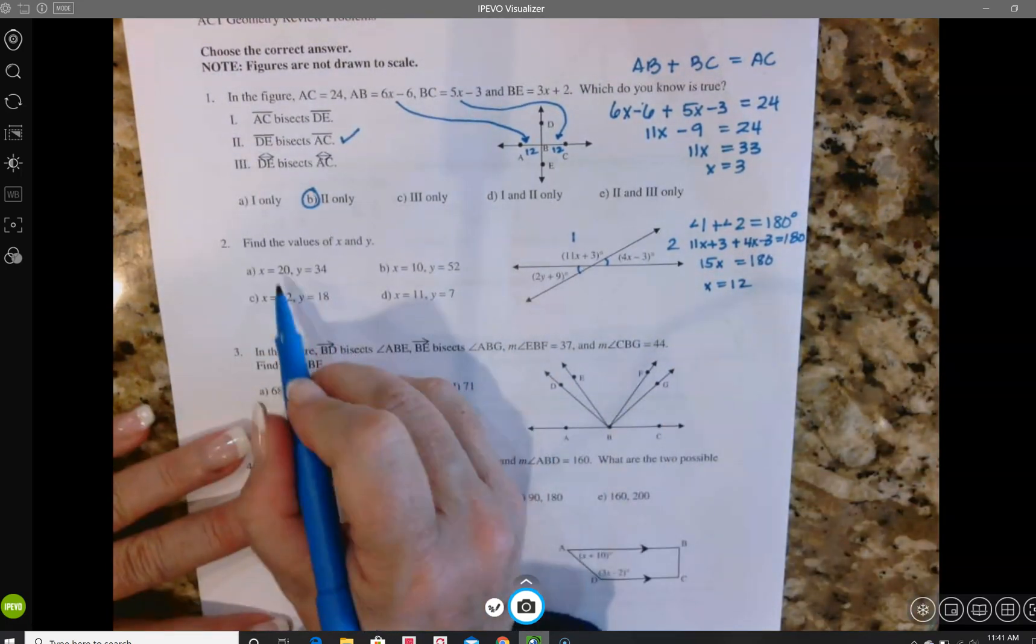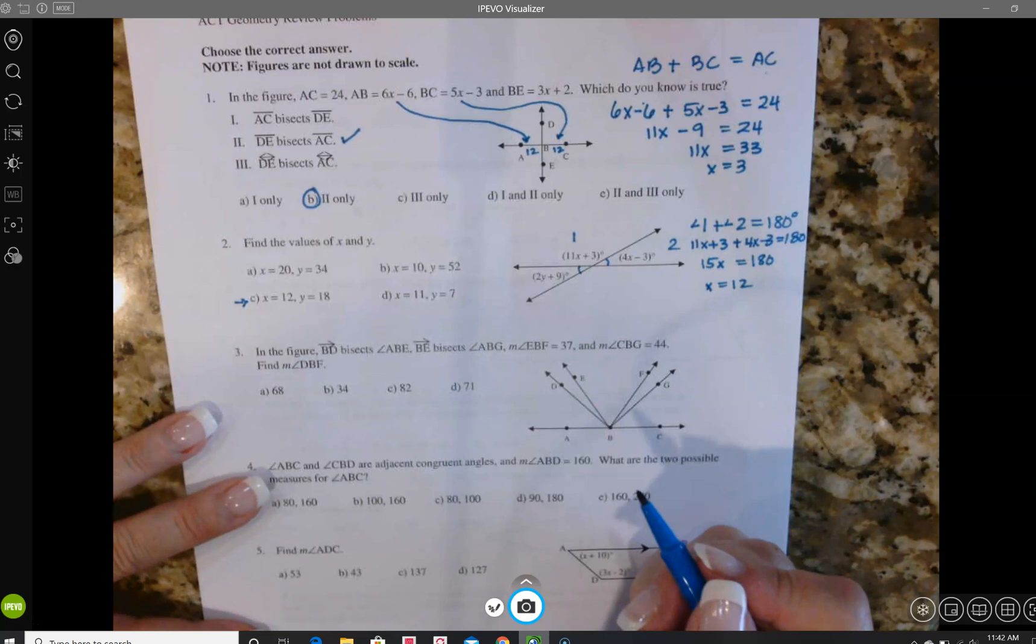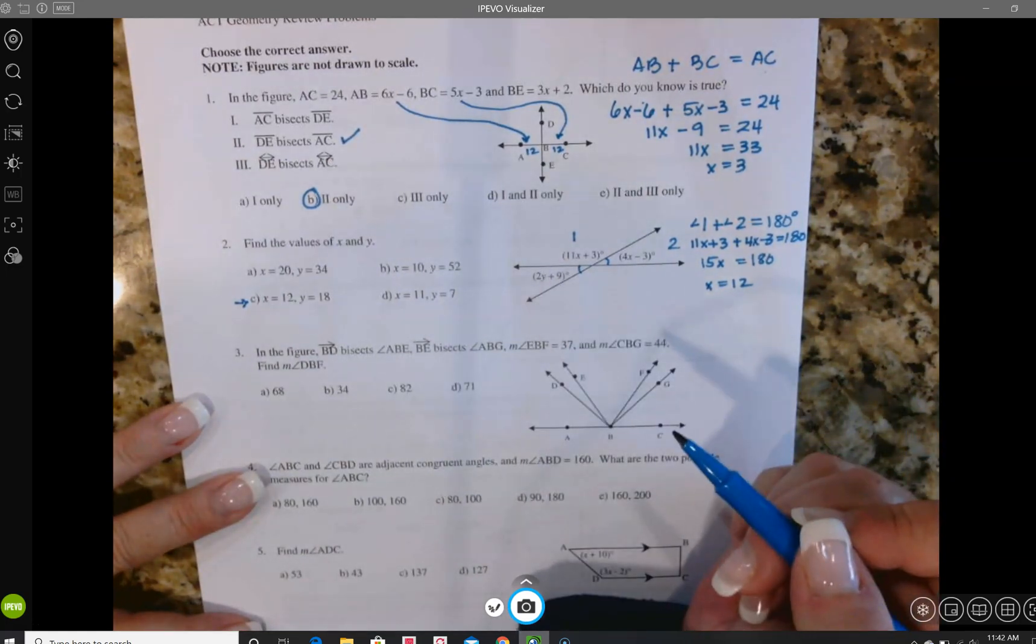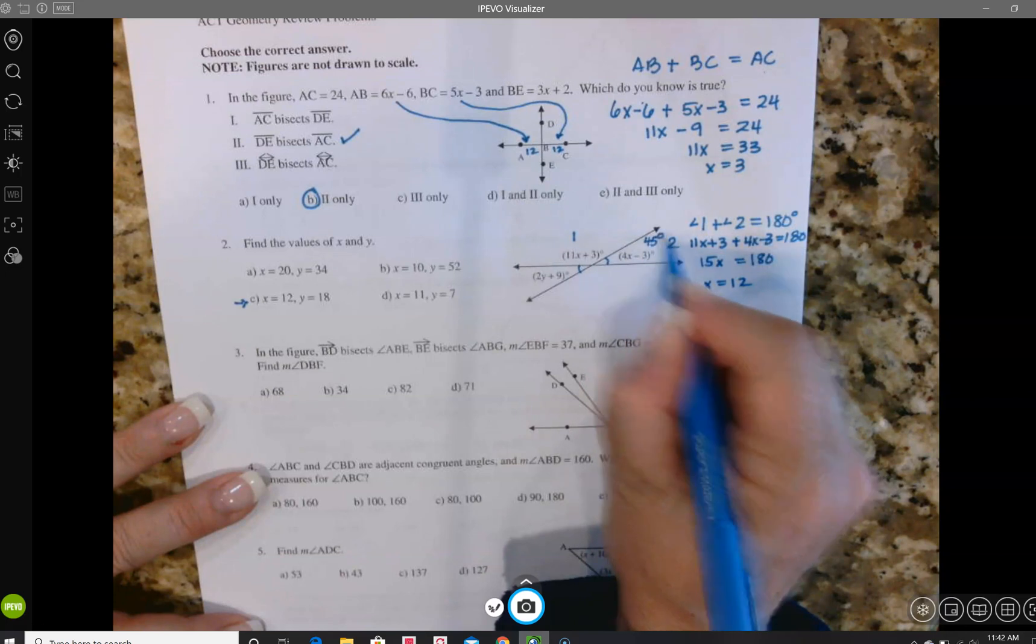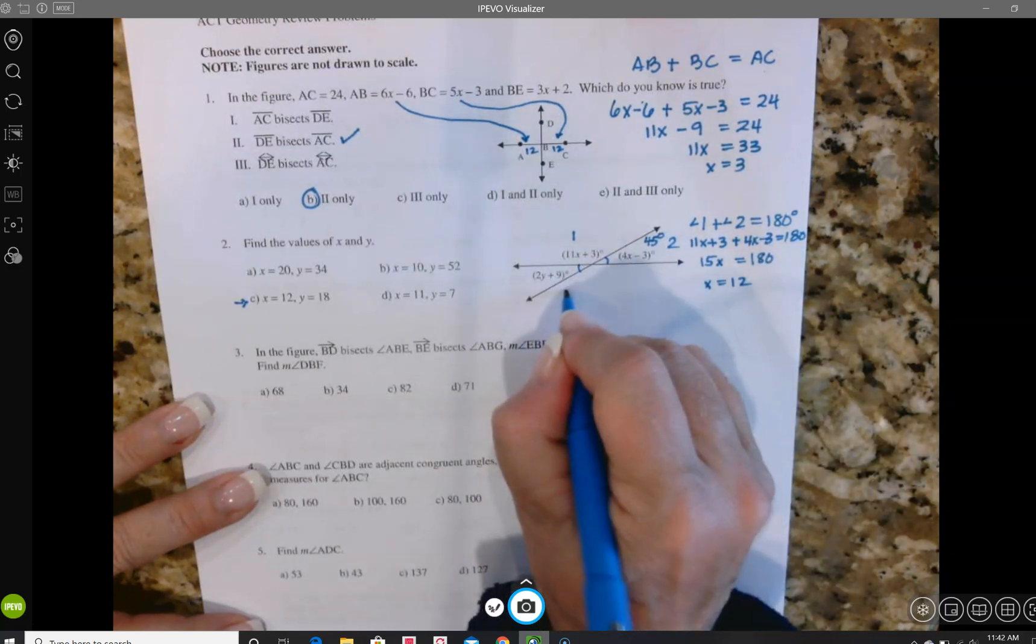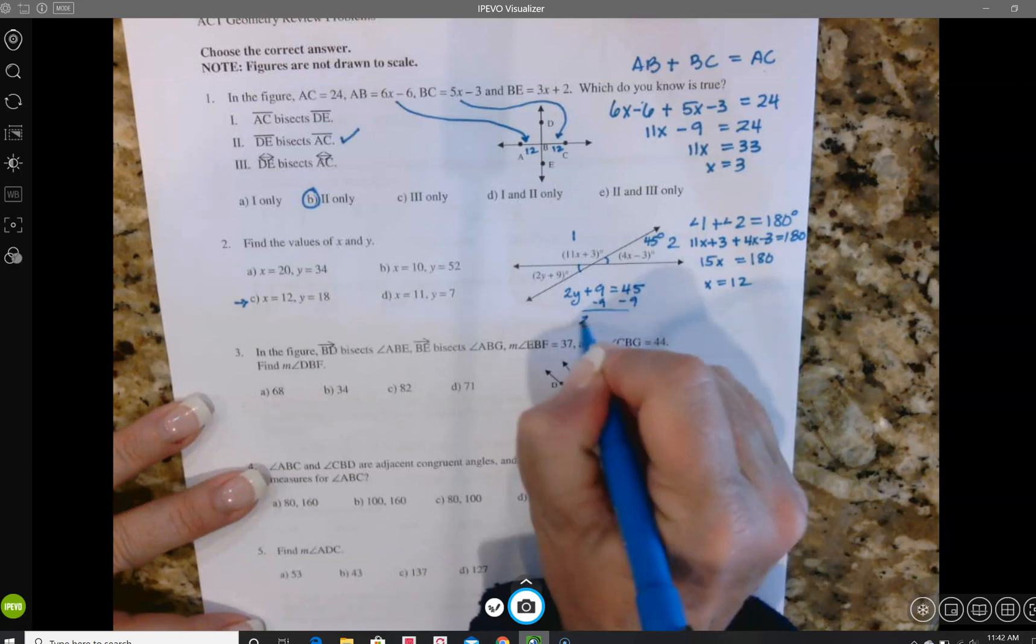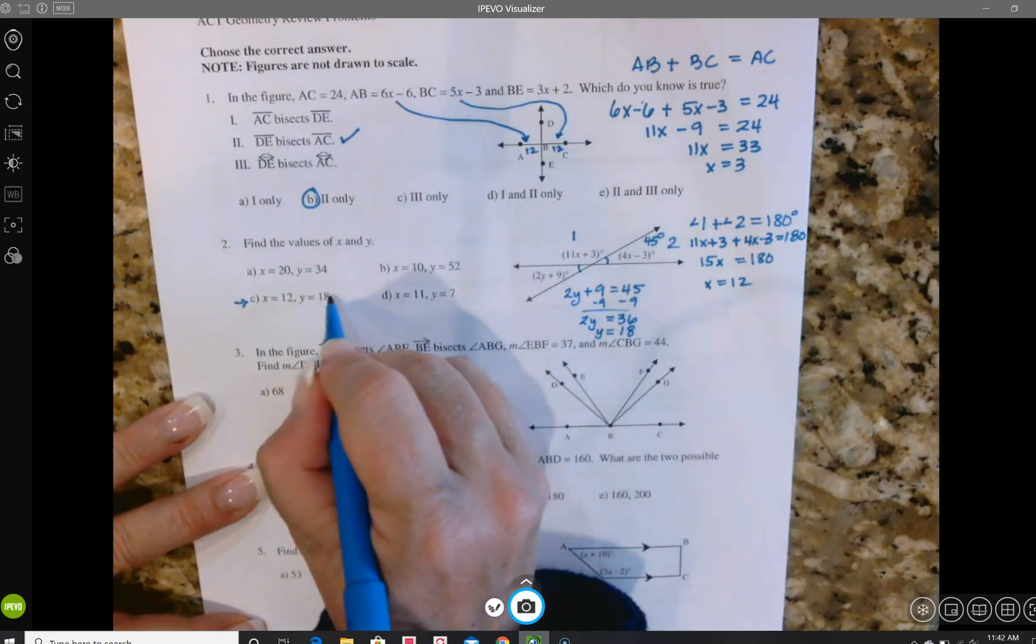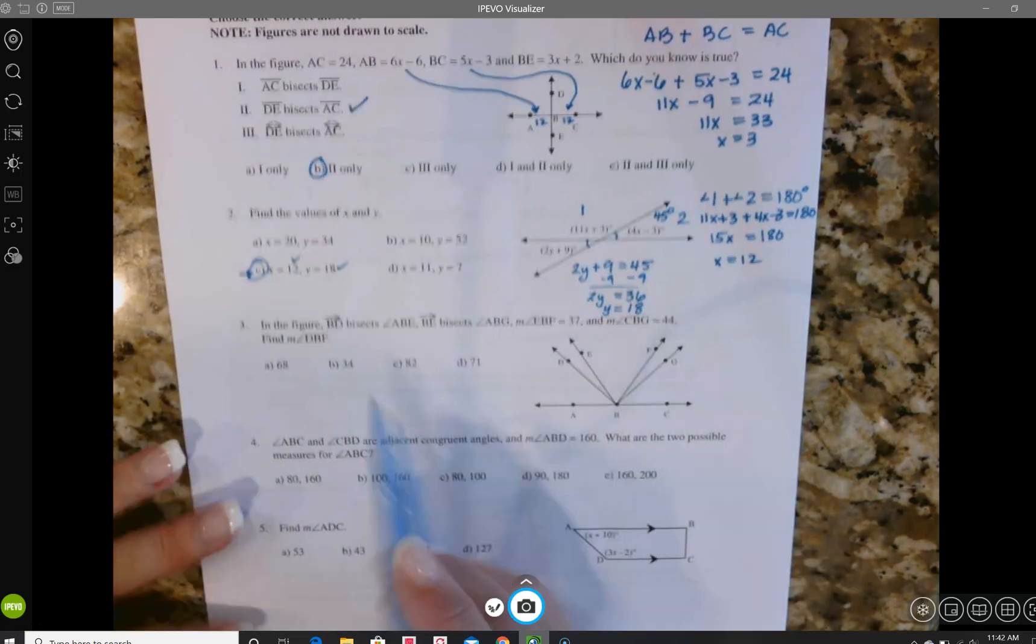So in checking my four choices I see that choice C is really the only one that has x equals 12, but I'll go ahead and plug in and just check my answer by solving for y. So 4 times 12 is 48 minus 3 that equals 45 degrees, and I know vertical angles are equal, so I'm going to go ahead and say 2y plus 9 equals 45. Subtract my 9 and I get 2y equals 36, so divide by 2 and y equals 18. So they both check out, so C is the best answer.